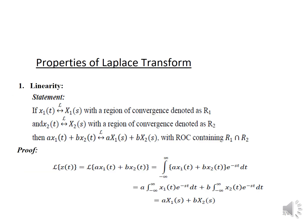First property: the linearity property statement. If the Laplace transform of X1(t) equals X1(s) with a region of convergence R1, and the Laplace transform of X2(t) equals X2(s) with a region of convergence R2, then the Laplace transform of A·X1(t) + B·X2(t) is given as A·X1(s) + B·X2(s), with ROC containing R1 union R2.